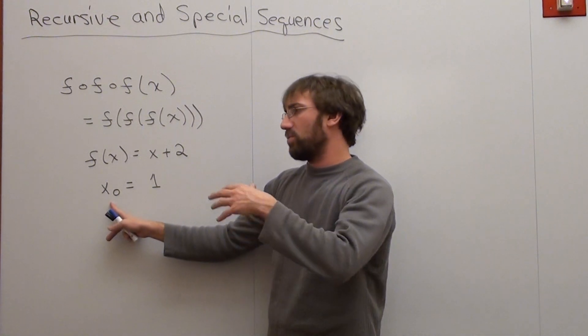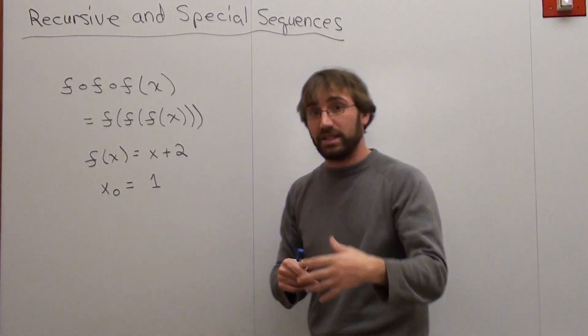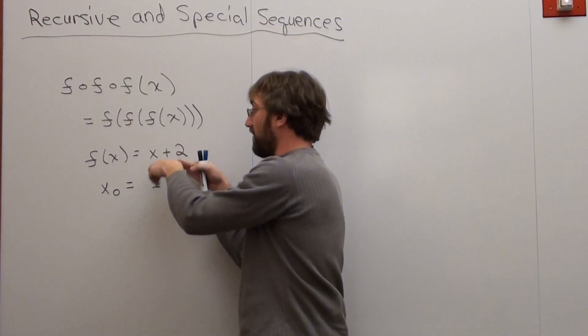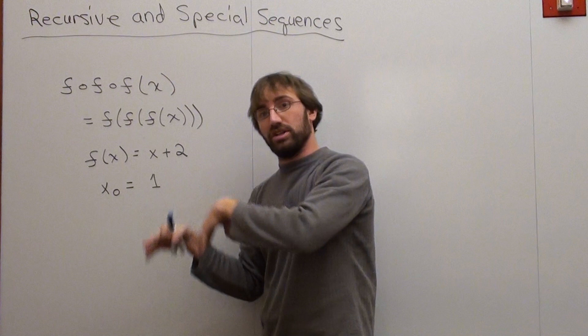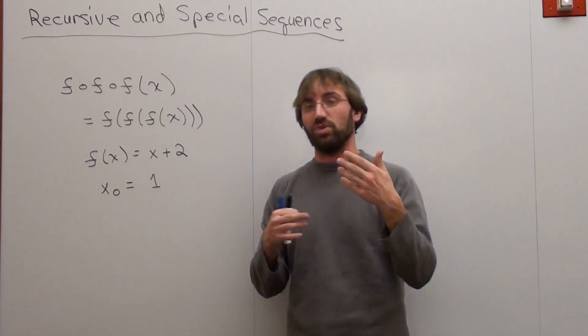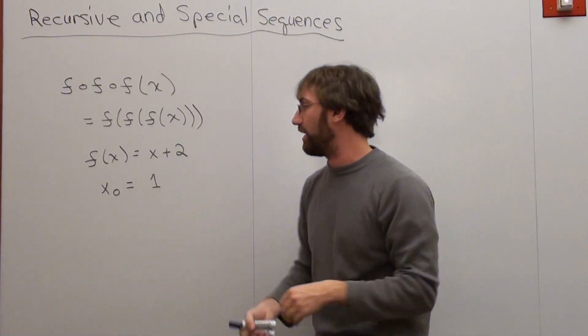And I'm going to start with something where x naught equals 1. And basically what I'm going to do is I'm going to substitute this value in, figure out what it is, then I'm going to substitute that value into this function again, and so on and so forth. And what it causes is it causes a sequence, and it's really quite cool. And since we're on the subject, why not talk about it?